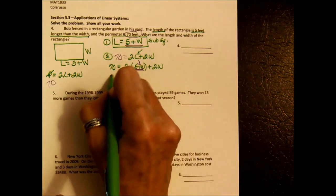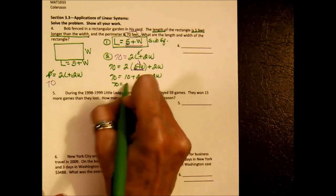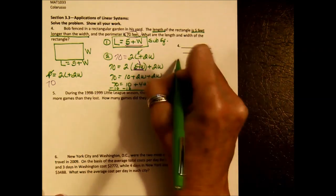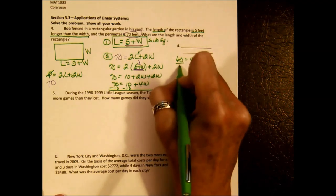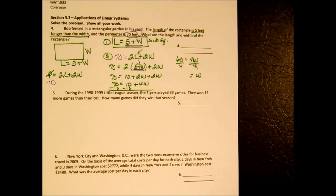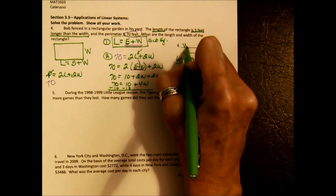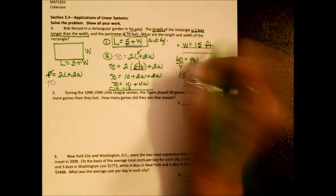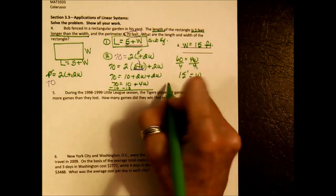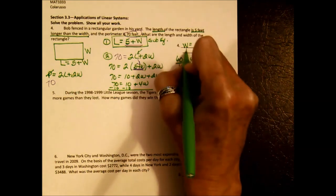Solving: 70 equals distribute — 10 plus 2W plus 2W, so 70 equals 10 plus 4W. Subtract 10 from both sides to get 60 equals 4W. Divide by 4 and we get W equals 15 feet. Using the substitution equation again to find length: L equals 5 plus 15, so the length is 20 feet.